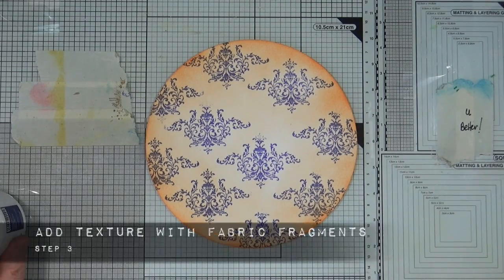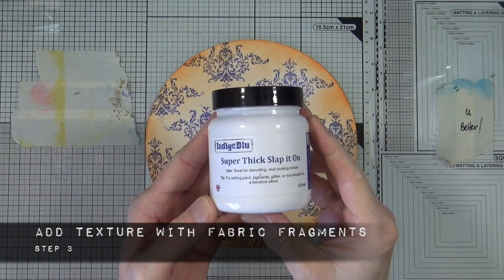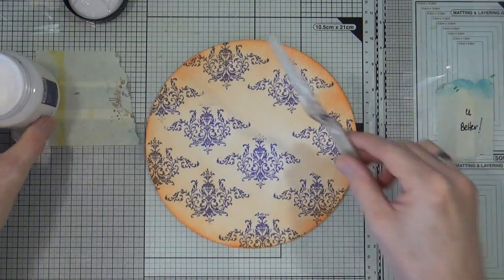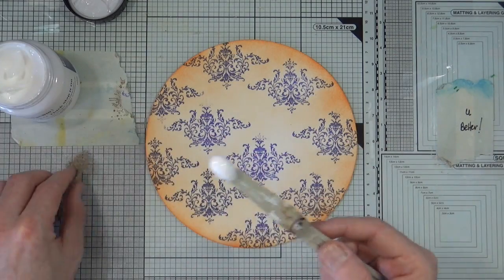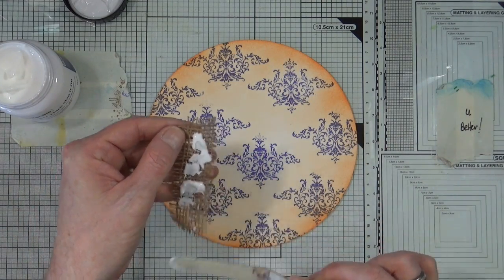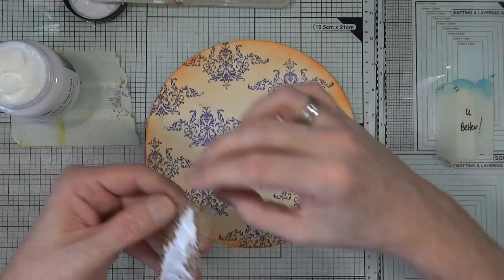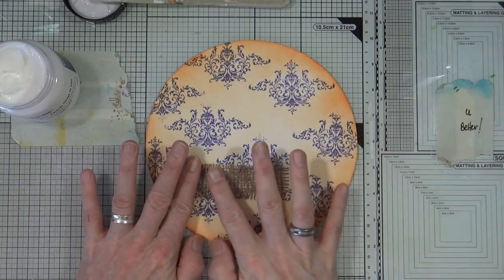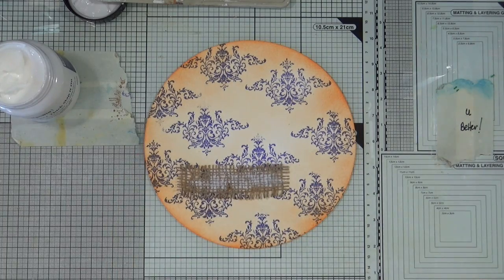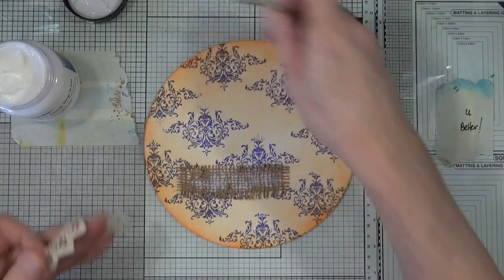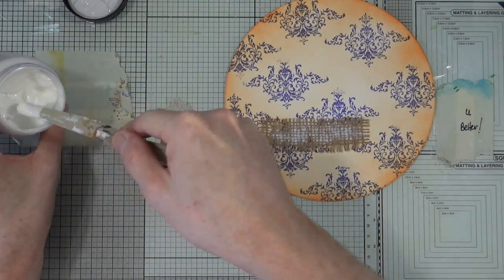So step number three is to add texture with fabric fragments. So I'm using the super thick Slapiton from Indigo Blue, and I have some fragments of burlap and a little piece of lace trim that I'm going to stick down onto my art journal page in a kind of L shape over towards the left-hand side of the page.